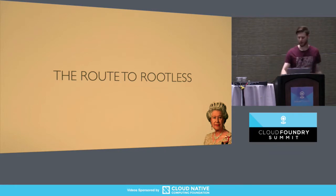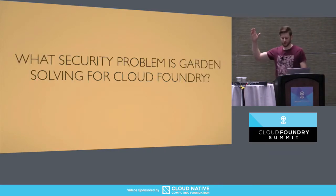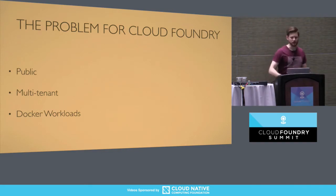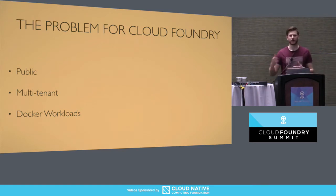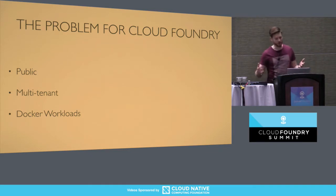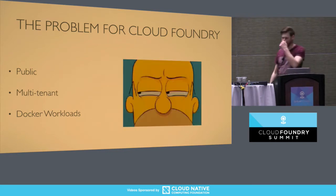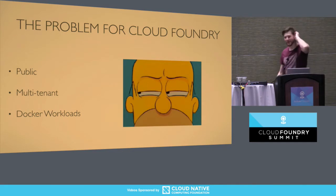What I'd like you to take away from this talk is really three things: one, what are the pieces that make up a container in Linux; how are those being facilitated now in an unprivileged or rootless manner; and how Garden is utilizing some of that to make the platform more secure. So let's start with a high-level problem statement: what security problem is Garden solving for Cloud Foundry right now? The problem for Cloud Foundry security-wise is it's public — you don't really know anything about your users. It's multi-tenant, so you could have malicious actors running alongside everyone else, and it can run Docker workloads if you've enabled the Docker feature flag. You could put almost anything in a Docker image, and all that together leaves me with a profound sense of distrust.